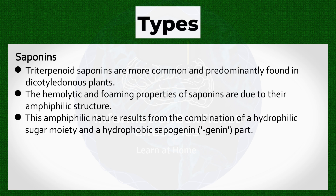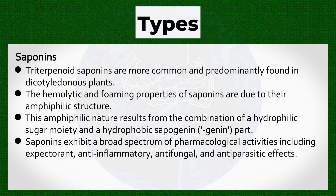The hemolytic and foaming properties of saponins are due to their amphiphilic structure. This amphiphilic nature results from the combination of a hydrophilic sugar moiety and a hydrophobic sapogenin part. Saponins exhibit a broad spectrum of pharmacological activities, including expectorant, anti-inflammatory, anti-fungal, and anti-parasitic effects.